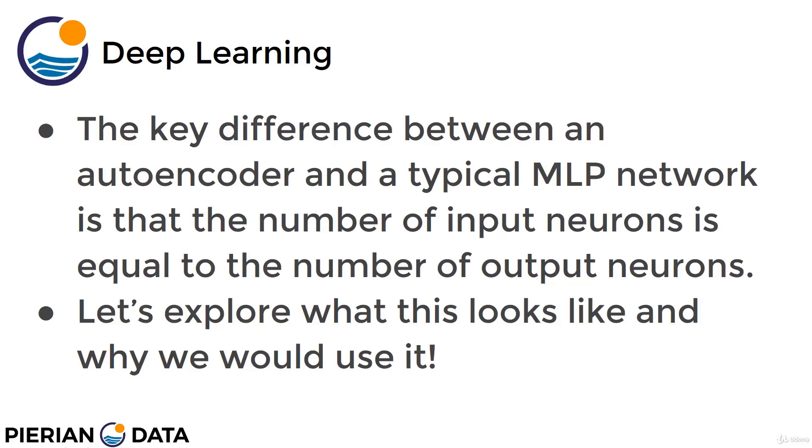The key difference between an autoencoder and the typical MLP or artificial neural network is that the number of input neurons will actually be equal to the exact same number of output neurons. Typically, we've been either having the output be equal to the certain number of classes we're classifying for, or equal to one neuron if we're dealing with a continuous output. However, in kind of a strange case here for the autoencoder, the number of input neurons is exactly equal to the number of output neurons. Let's explore what this actually looks like and why we would even want to build a network this way.